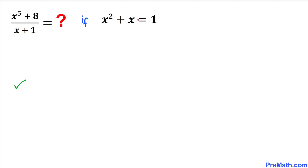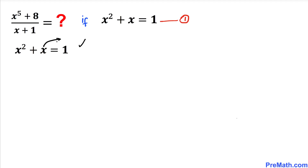Let's focus on the given equation — I'll call this equation number one. Moving x to the right hand side, this equation simply becomes x squared equals 1 minus x. We'll call this equation number two.